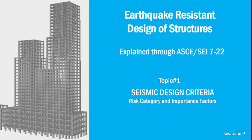Welcome to this series on earthquake-resistant design of structures, explained through the code provisions contained in ASCE SEI 7-22. This is the first presentation of the series. Today we will discuss the risk category and importance factors, which are essentially two parameters that come under seismic design criteria.